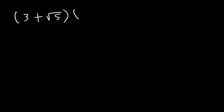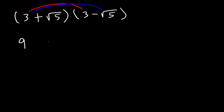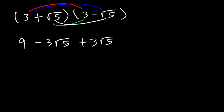Sometimes you may need to multiply two conjugates together. Whenever you see this, FOIL and know the middle terms will cancel. So first, 3 times 3 is 9. Then 3 times negative root 5 is negative 3 root 5, and root 5 times 3 is positive 3 root 5 — these middle terms cancel. Finally, root 5 times negative root 5 is negative root 25, which is negative 5. So 9 minus 5 equals 4.